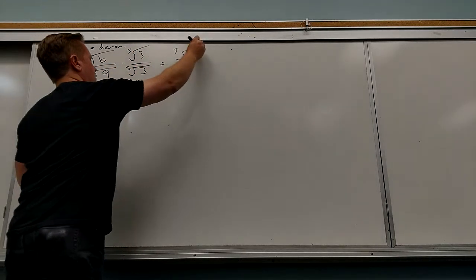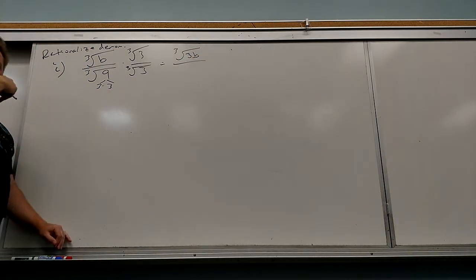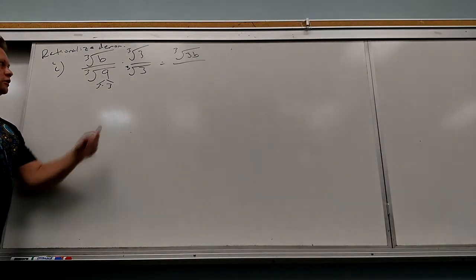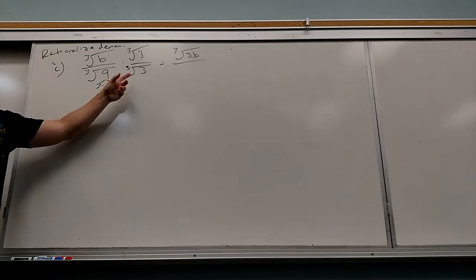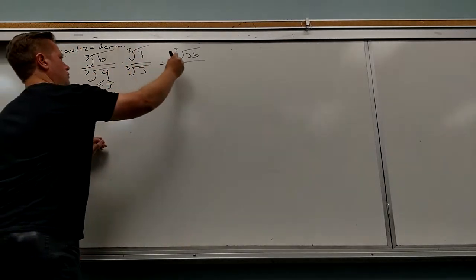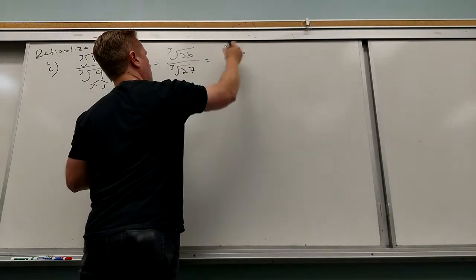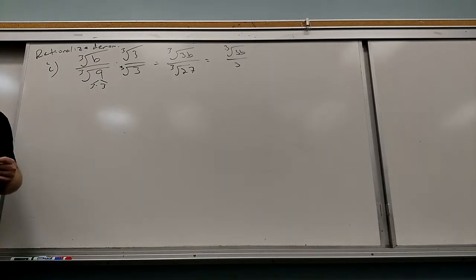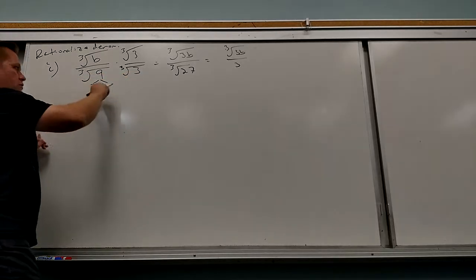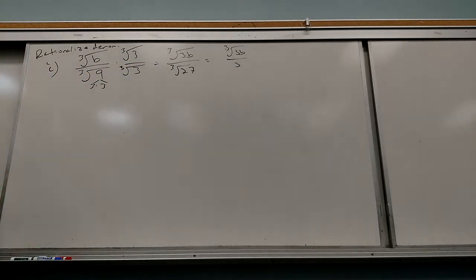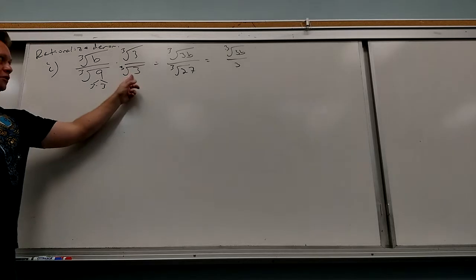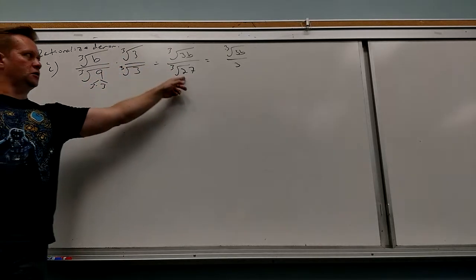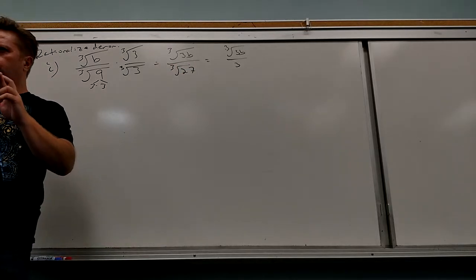So what do you got on top? The top just gets those things put together. On the bottom you get cube root of 27, which of course is 3. Is the bottom irrational anymore? No — it's a nice whole three. You got the 27 from multiplying 9 by 3, or you could have done 3 times 3 cubed. You guys might get to the point where you can skip a step because you put the thing that would make it a whole three.